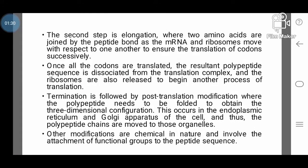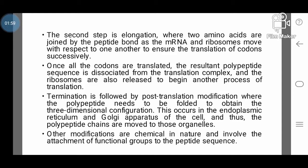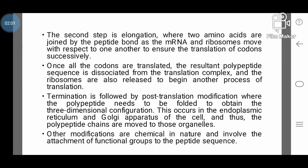The second step is elongation, where two amino acids are joined by the peptide bond as the mRNA and ribosomes move with respect to one another to ensure the translation of codons successively. Once all the codons are translated, the resultant polypeptide sequence is dissociated from the translation complex and the ribosomes are also released to begin another process of translation.